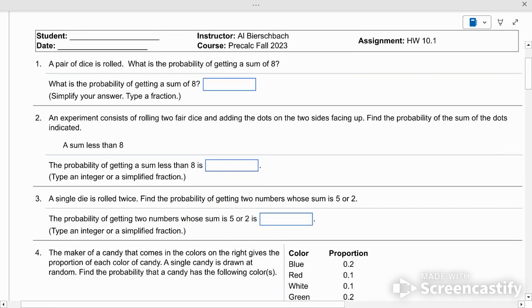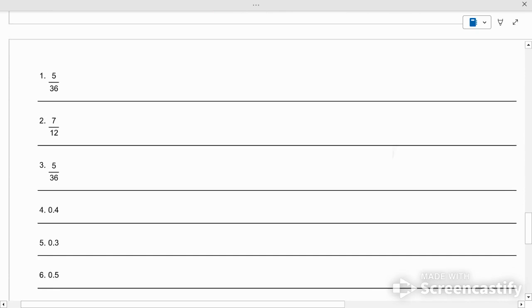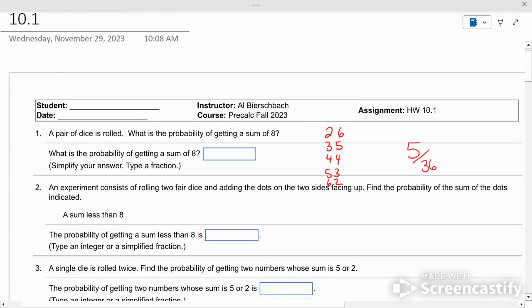Alright. A pair of die are rolled. What's the probability of getting an 8? Well, an 8 consists of a 1 and a 7. Is there such a thing as a 7 on a die? No. So it would be a 2 and a 6, a 3 and a 5, a 4 and a 4, a 5 and a 3, or a 6 and 2. So there are 5 chances out of the 36 total chances of getting an 8. 5 out of 36. Because there's 6 times 6 chances, 6 in each die.